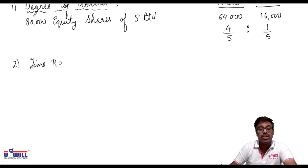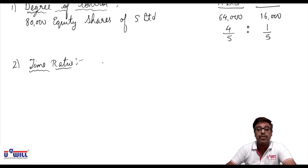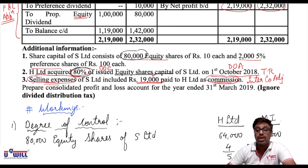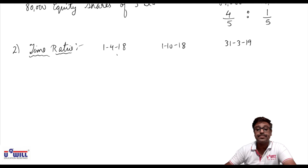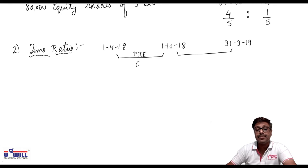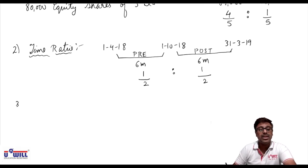Working Note 2 - Time Ratio: Three dates: 1st April 2018 (beginning of year), 1st October 2018 (date of acquisition), 31st March 2019 (year ending). Pre-acquisition period: April to September = 6 months; post-acquisition period: October to March = 6 months. Time ratio is 1:1, i.e., 1/2 pre-acquisition and 1/2 post-acquisition.